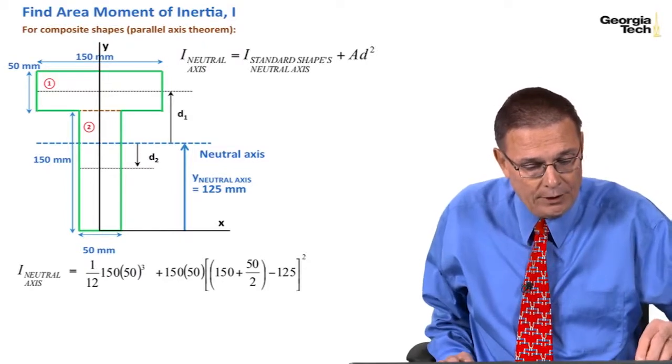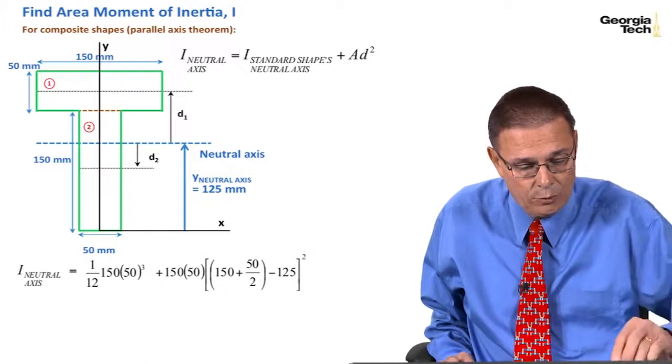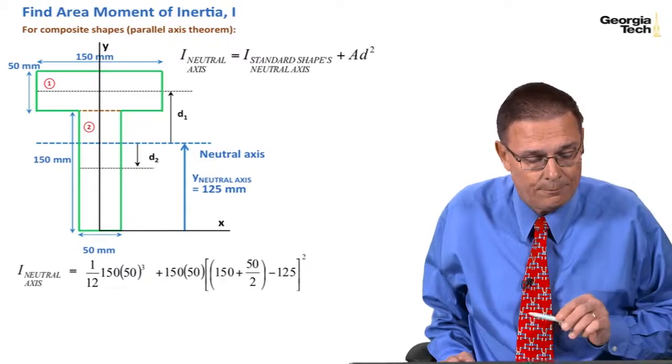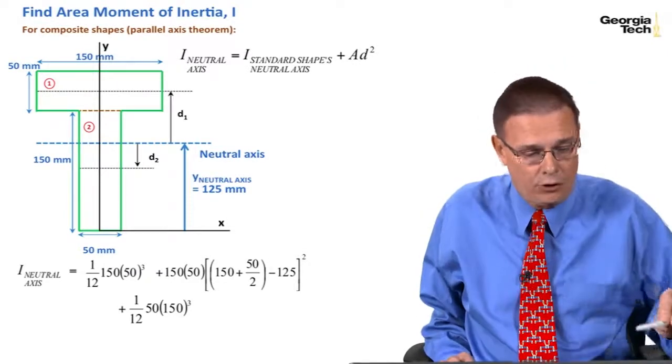So d1, what I've done here is I've taken the total distance up to this line, which is 150 plus 50 divided by 2, and then I've subtracted the distance to the neutral axis. And then I do the same thing for the other standard shape.